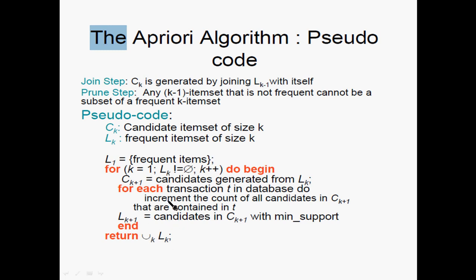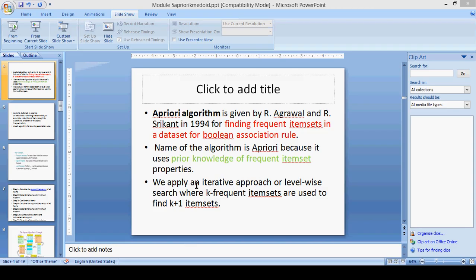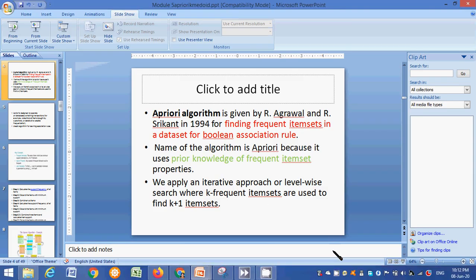That is what we call the Apriori algorithm. L1 is the frequent 1-item set, L2 is the frequent 2-item set, and LK is the final set. That is the Apriori algorithm. Thank you.